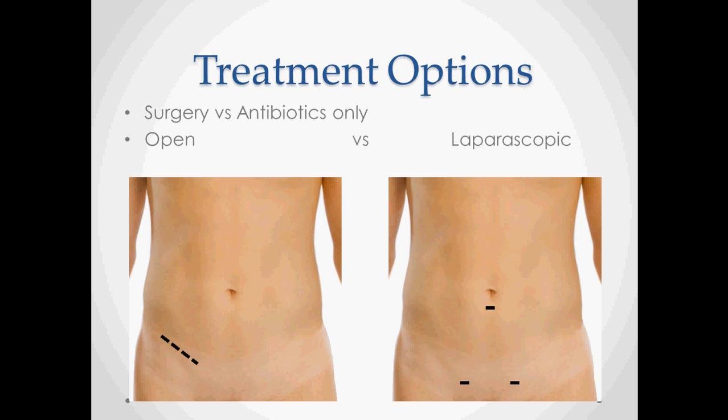Generally you treat appendicitis with surgery. There are instances where you will watchfully wait — if there is high risk for surgery and the symptoms are not severe, you may hold off. But most of these people need to go to surgery to prevent rupture and the infection that comes after that. You can do an open appendectomy or a laparoscopic appendectomy. With the laparoscopic approach, most people put a trocar just below the navel, and what some would say is the most aesthetically pleasing placement would be along the line of the inguinal ligament.